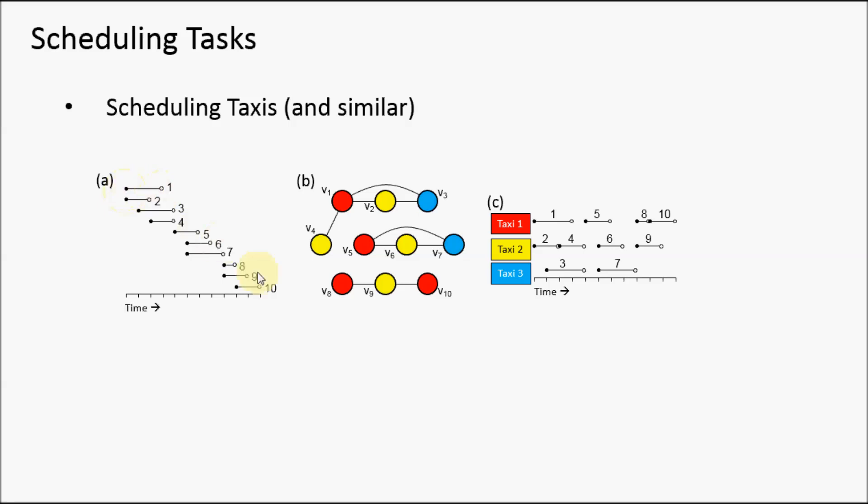These ten journeys have already been booked in advance. The left of the line denotes when they will be leaving the taxi rank, and the right denotes when they will be returning. A taxi cannot embark on another journey until it has returned from a previous journey.